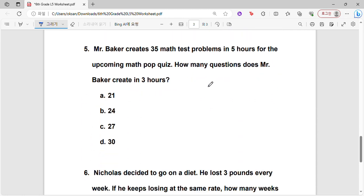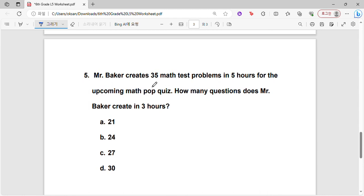Okay, let's do this question. Mr. Baker creates 35 math test problems in five hours for the upcoming math pop quiz. How many questions does Mr. Baker create in three hours? Again, the information given can give us our rate—35 math test problems in five hours. So we need to find the number of math test problems that is being created per hour in order to find the amount of questions that was created in three hours. So first we would just find the rate.